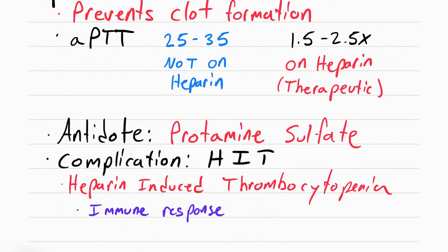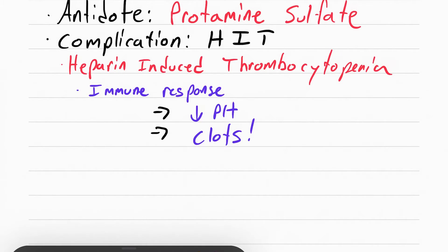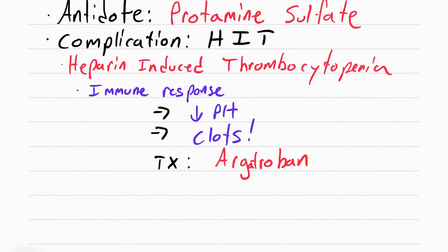With HIT, the platelets are being used and begin to drop, and the body starts forming clots. These clots can go anywhere — to the leg causing a DVT, to the lungs causing a pulmonary embolism, or to the heart causing a myocardial infarction. To treat HIT, we give a different anticoagulant called argatroban. Normal platelet count is around 150,000 to 400,000, and HIT causes it to drop to around 60,000 — this is not enough to cause significant bleeding, so your concern with HIT is clot formation, not bleeding.